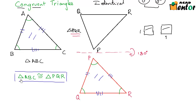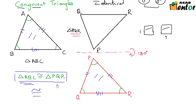I have said triangle ABC is congruent to triangle PQR. This sign here — an equal-to sign with an inverted S — is known as the congruent-to sign. This means that anything to its left is exactly the same as anything to its right; they are congruent.